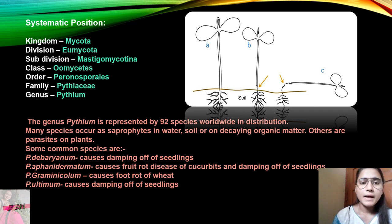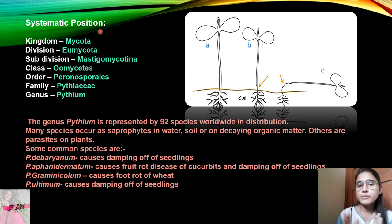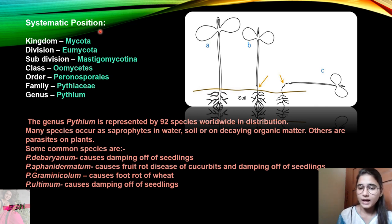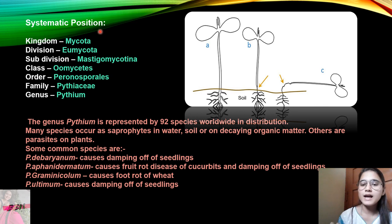We will first see the systematic position of Pythium. Whenever you describe any fungus, alga, pteridophyte, gymnosperm, or angiosperm, the first thing to tell is its systematic position — what position it holds in the plant world. Then describe its characters, number of species, diseases it causes, vegetative structure, and reproductive stages. Following this criteria in your exam paper will definitely get you full marks.